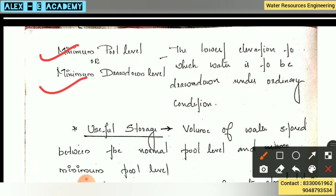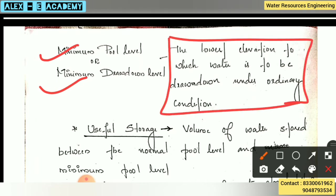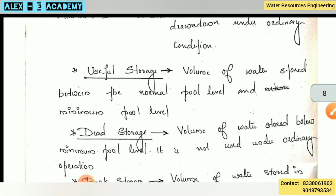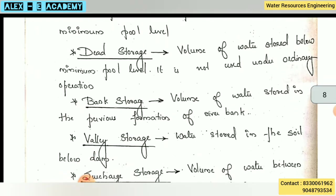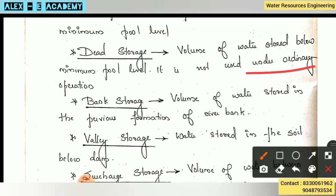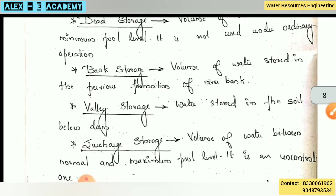This is the minimum pool level or minimum drawdown level — the lowest elevation to which the water is drawn down under ordinary condition. This is the maximum level of water draw and the lowest useful level. The minimum pool level is known as the minimum pool level; it is not used below this under ordinary condition.